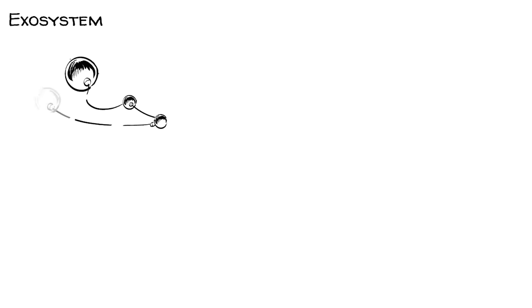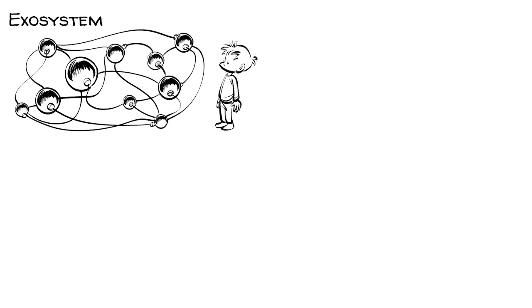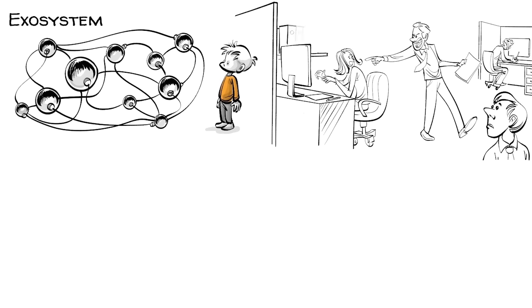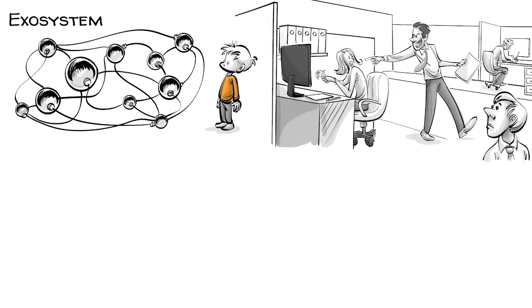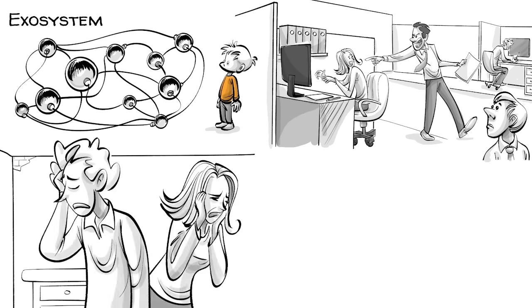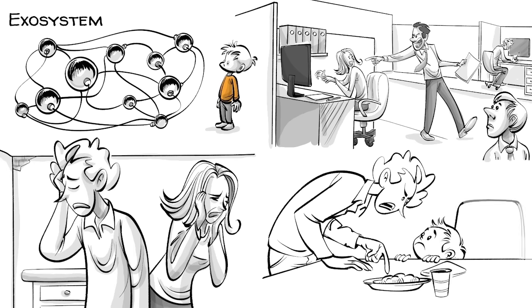The exosystem involves the links between social settings that do not involve the child. For example, a child's experience at home can be influenced by their parents' experiences at work. If the mother loses her job, there might be more arguments with the father resulting in changes in their interaction with the child.